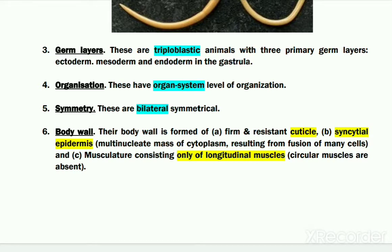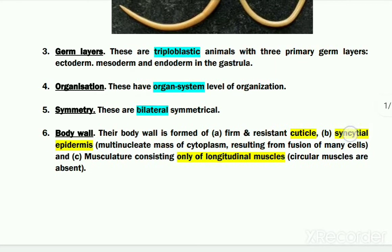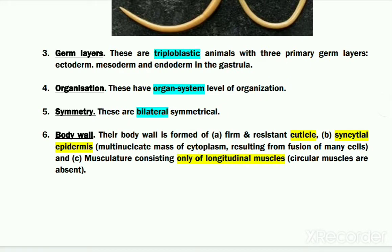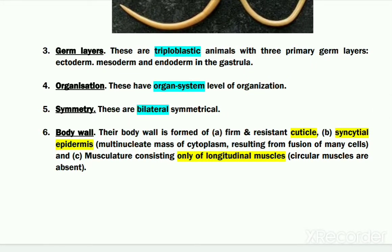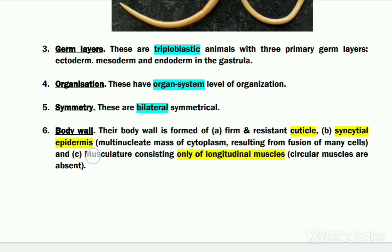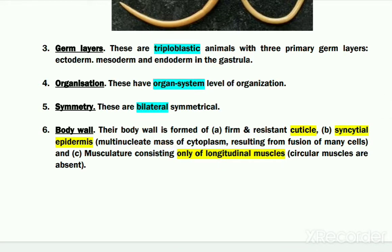Regarding their body wall: the body wall of these organisms consists of three layers. The outermost layer is a non-living or acellular cuticle. Below the cuticle is the epidermis, which is syncytial — meaning many cells fuse together forming a very large mass of cytoplasm containing many nuclei, termed the syncytial epidermis. Below the epidermis is the muscle layer, which consists only of longitudinal muscle fibers; circular muscles are altogether absent from the body wall.